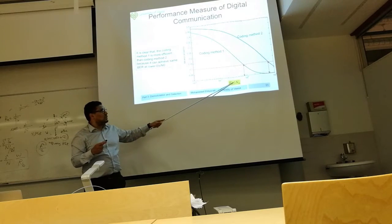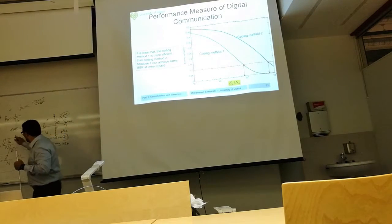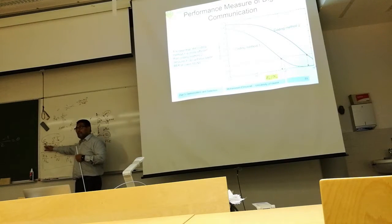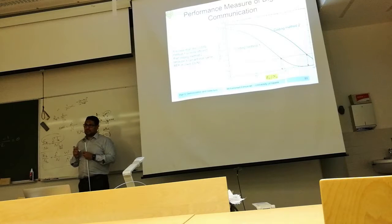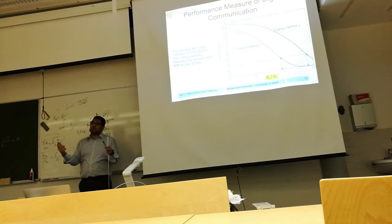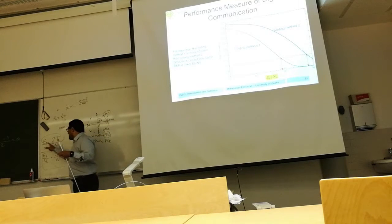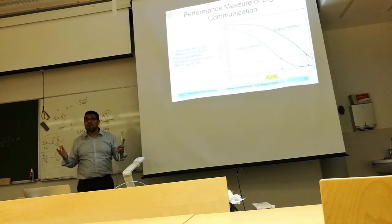To achieve a lower Eb/N0 requirement, you need to increase Eb. There are two ways to increase Eb: increase signal power S or increase the bit duration Tb (reduce bit rate). Increasing power is not always desirable — we have limits, and increasing power causes more interference to others. Increasing Tb reduces the data rate, which is also undesirable.